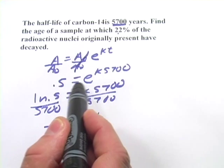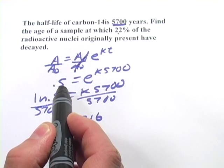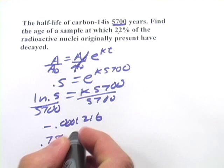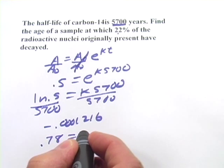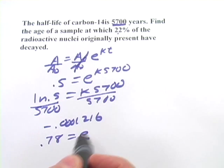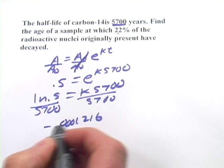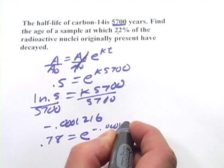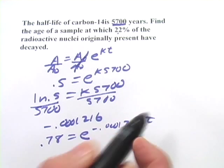So we can set up an equation just like this one, except instead of putting in 0.5 here, we'll put in 0.78 to represent the 78% that are left. And this time, we don't have t. They're asking us to find the age. So that's the number of years that have passed. But we do have k. So this is e to the negative 0.0001216 times t power.